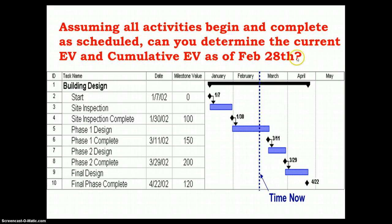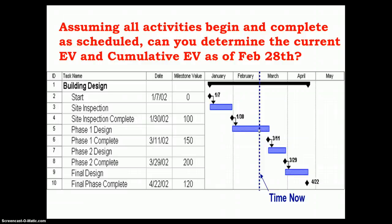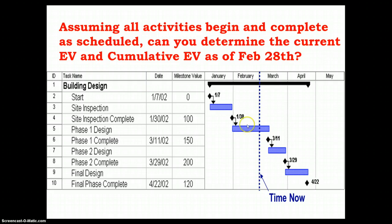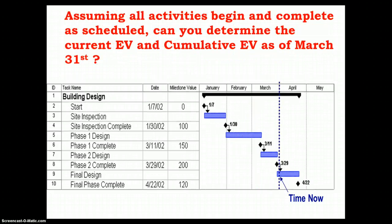For the second period, can you determine the current and cumulative earned value as of February 28th? No additional milestones have been achieved. Some work has been done on phase 1 design, but phase 1 is not yet completed. Credit can only be taken once a milestone has been accomplished. Since no milestones were scheduled or accomplished during February, the earned value for this period is zero, and the cumulative earned value by end of February remains $100,000.